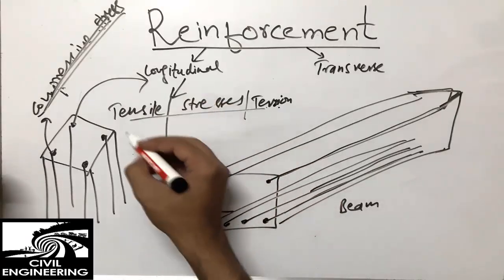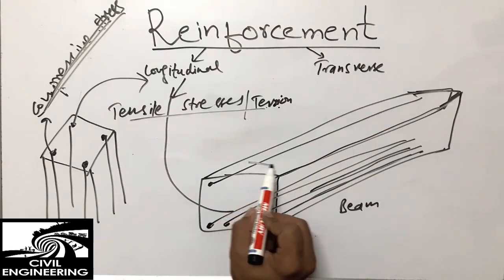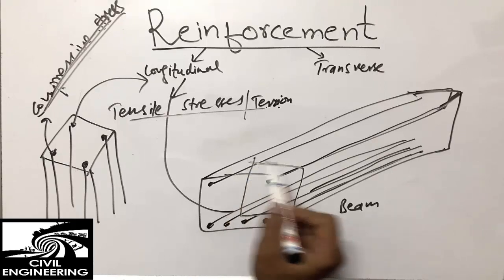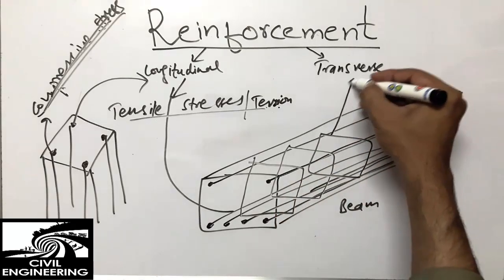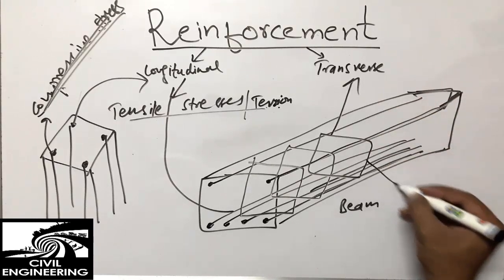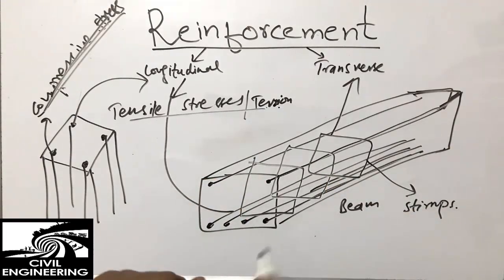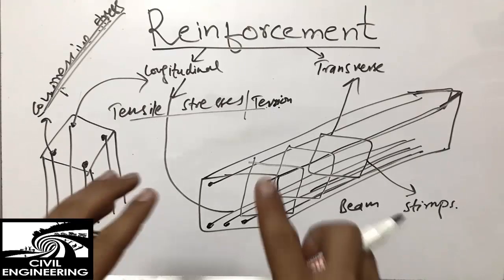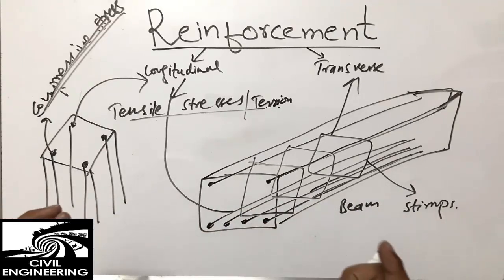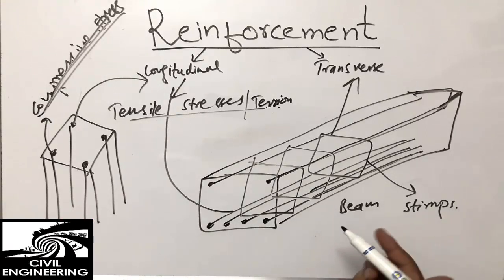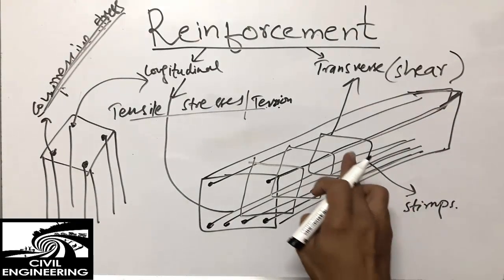Now, coming to transverse reinforcement — these are the reinforcements used to hold the main longitudinal reinforcement in the beam. You have mostly seen this type of reinforcement in beams, and we call them stirrups. Stirrups are used to hold the longitudinal reinforcement in place during concrete pouring so it doesn't get disturbed, and also during earthquakes and shearing stresses to resist shear forces.